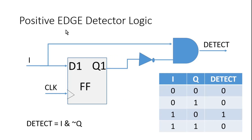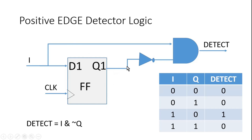Friends, before knowing the Verilog code of a positive edge detector, firstly we should understand its logic circuit diagram. This is the logic circuit diagram of a positive edge detector, which I already explained in depth in one of my previous videos. I will share its link in the description section as well as in the i-bar section. But here we will only discuss the Verilog code. Just note that here we have one flip-flop whose output goes to a NOT gate and then to an AND gate. Input i is directly applied to the AND gate, and we get the detect signal.